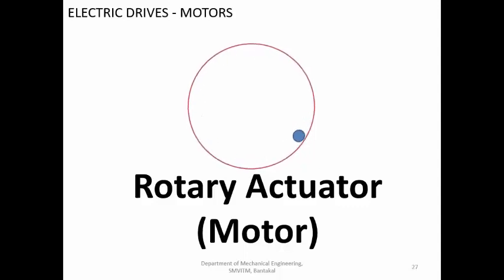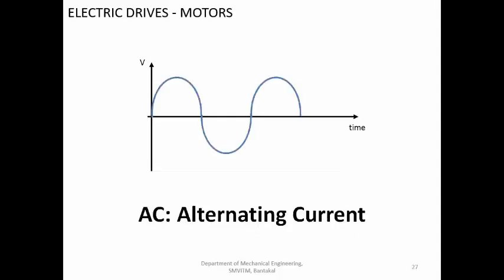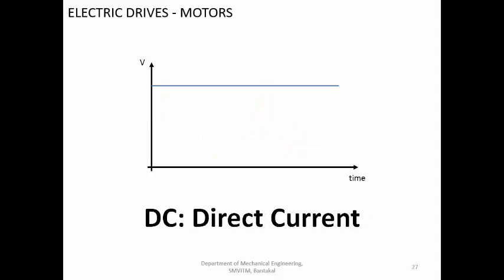Whenever we say electric, the first thing that comes to mind is power sources. One is DC and the other is AC. DC means direct current — the current or voltage will be constant at a particular value and will not change in polarity. When we say AC, the voltage polarity is continuously changing from 0 to maximum, then back to 0, then going in reverse polarity from 0 to maximum again. So it looks more or less like a sine wave, whereas DC is at a constant value.